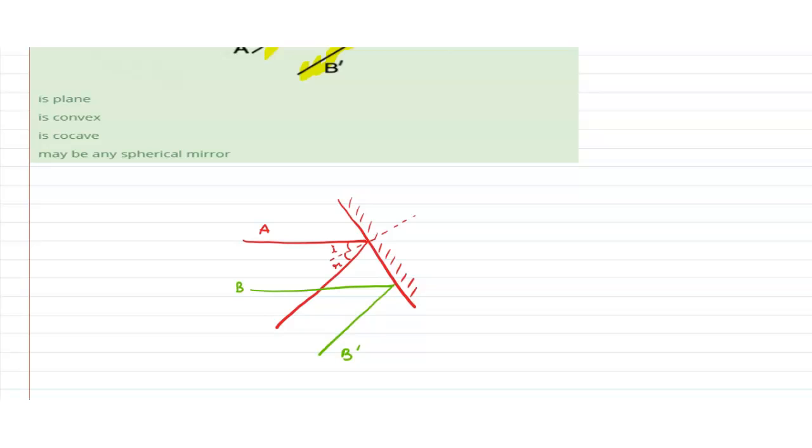This is A dash and this is B dash, and this is normal. This is angle of incidence and this is the angle of reflection. As we know that the angle of incidence equals angle of reflection.